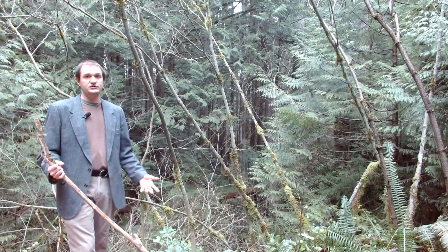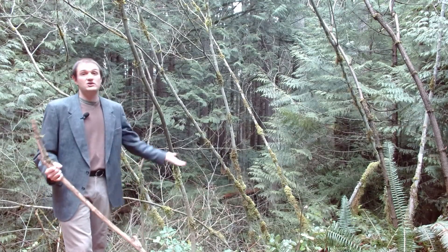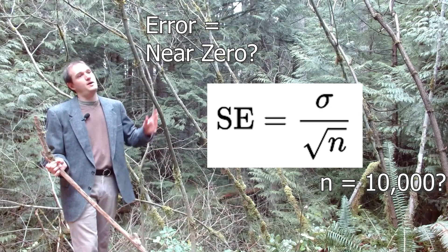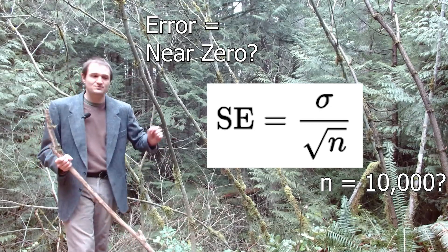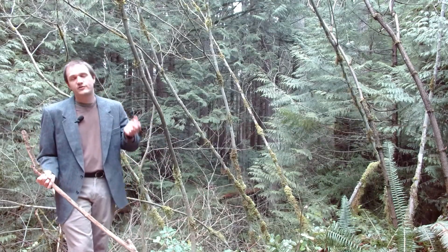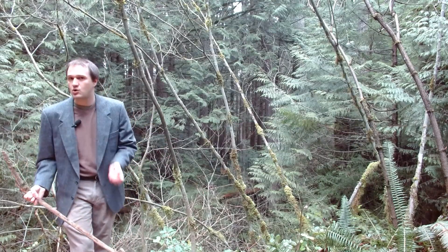So why can't we just take the model's error and assume that if we apply the model to 10,000 pixels the error will kind of level out — that the more pixels we apply the model to, the better it's going to do, and that if we apply it to 10,000 pixels the model's going to be perfect? Well, the problem comes down to an issue called spatial autocorrelation.